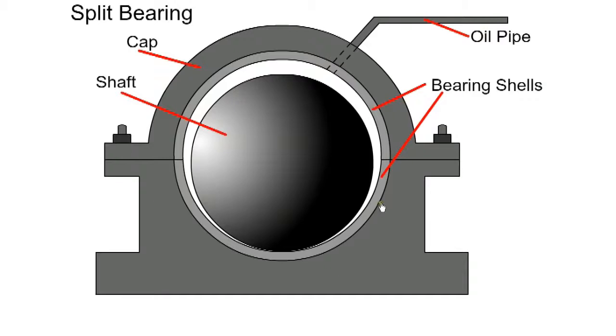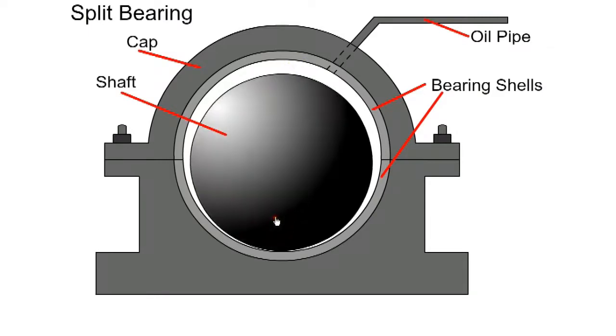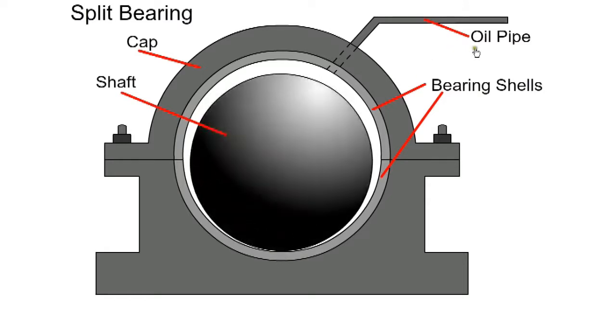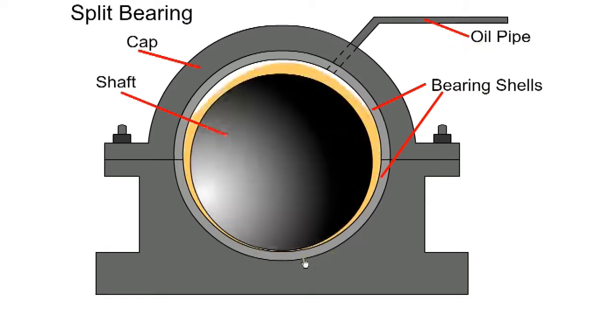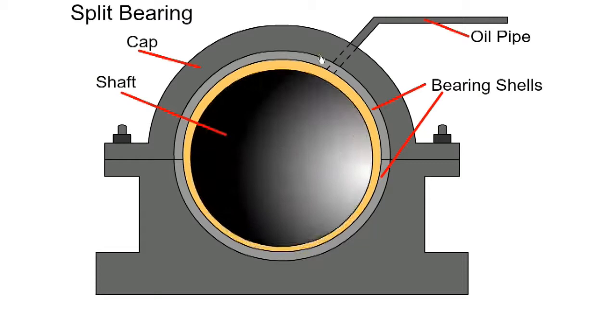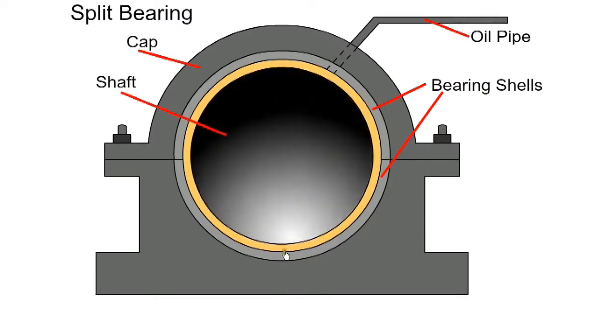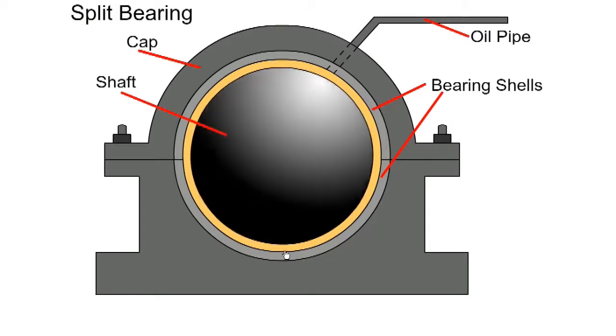The bearings in an engine use hydrodynamic lubrication. There is a very small clearance between the shaft and the bearing journal. When the engine is started the shaft runs without lubrication for a short period. When oil is introduced, a film of oil is dragged around by the shaft and the shaft is then centered in the bearing housing. Now we have hydrodynamic lubrication.